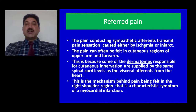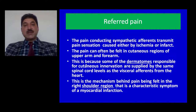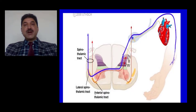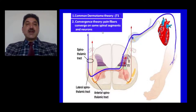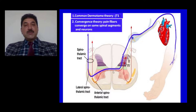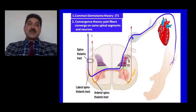Thus the pain is referred to the inner side of the arm. The pain can often be felt in the cutaneous regions of the upper arm and forearm. This is because some of the dermatomes responsible for cutaneous innervation are supplied by the same spinal cord levels as the visceral apparatus of the heart. This is the mechanism behind pain being felt in the right shoulder region, which is a characteristic symptom of myocardial infarction. There are many theories of referred pain. One is the common dermatome theory. The second, widely accepted theory, is the convergence theory — pain fibers converge on the same spinal segments and neurons. Pain from the inner side of the arm and heart terminate in the same spinal segment; from there the pain is carried to higher centers which cannot differentiate between the two. This accounts for the anatomical basis of referred pain.